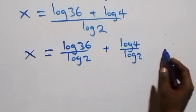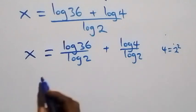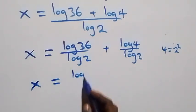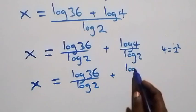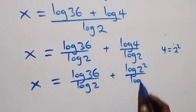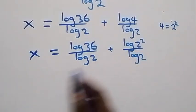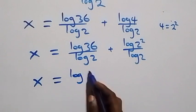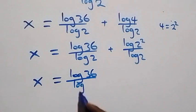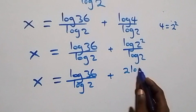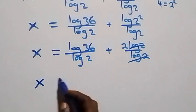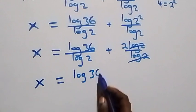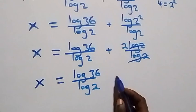We express 4 as 2 squared, so x equals log 36 over log 2 plus log 2 squared over log 2. Applying the power rule, 2 comes down: x equals log 36 over log 2 plus 2 log 2 over log 2. Log 2 cancels, leaving x equals log 36 over log 2 plus 2.